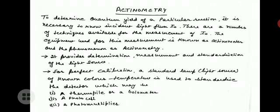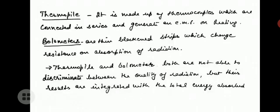Actinometry provides determination, measurement, and standardization of light sources. For perfect calibration, a standard lamp light source of a known color temperature is used to standardize the detector, which may be a thermopile, a bolometer, a photocell, or a photomultiplier. Let us study them one by one. A thermopile is made up of thermocouples which are connected in series and generate an EMF on heating.